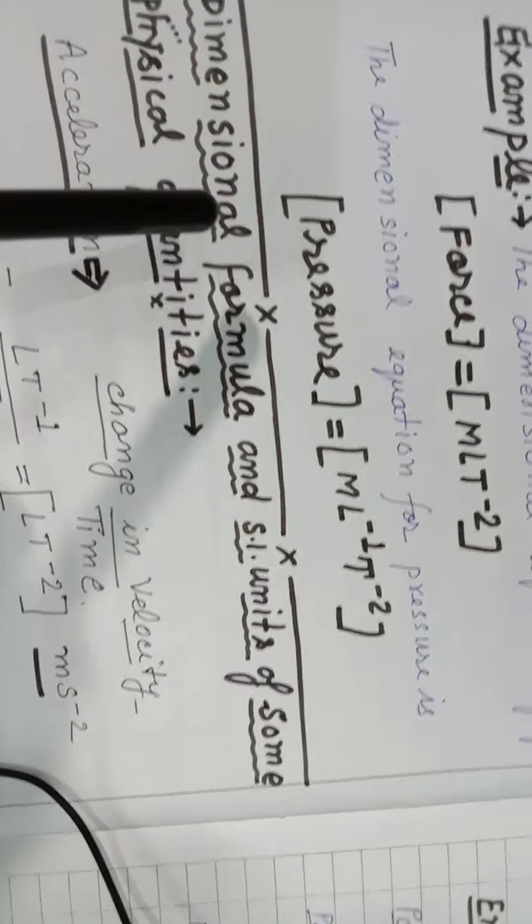Acceleration equals change in velocity upon time. Change in velocity means velocity has dimension [LT⁻¹]. So acceleration's dimension is [LT⁻²] — that is, L T to the power minus two, meters per second squared.